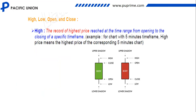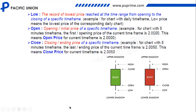Let's talk about the prices. The high is the top price at which a currency has reached. The high is a record of the highest price reached at the time frame from the opening to the closing of a specific time frame. For example, for charts with a five-minute time frame, the high price means the highest price of the corresponding five-minute chart. So the high is the highest price the candlestick has reached in a particular time frame — once this candlestick has closed, this is the highest point it reached in that time frame.